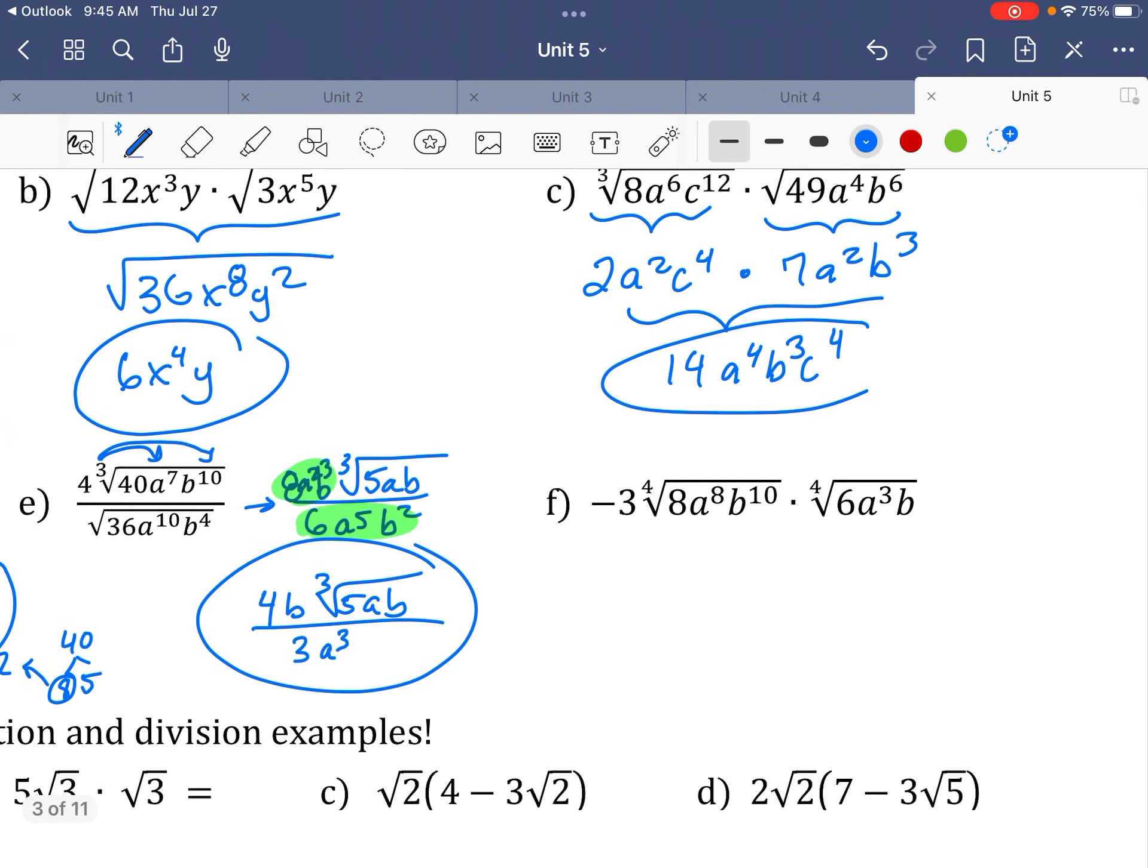All right. So over here, I have multiplication. I have fourth roots. So, like I said, put it all together. So I have negative 3 on the outside. I have one big fourth root. 8 times 6 is 48. 8, a8 and a3, a11, b11 also. Okay, so 48, a good fourth root.